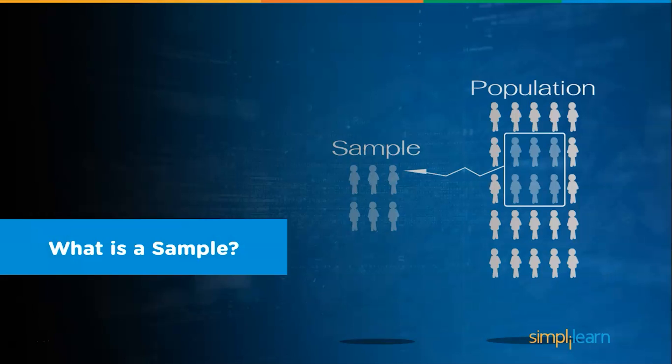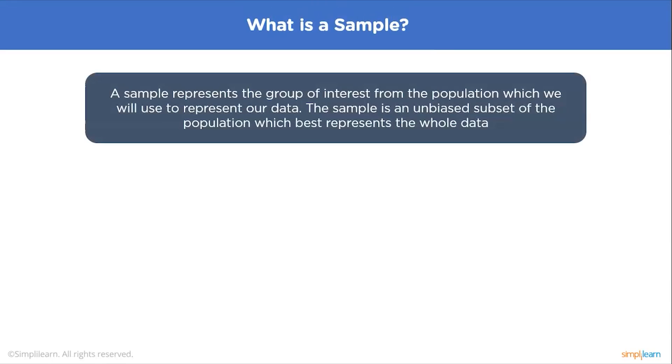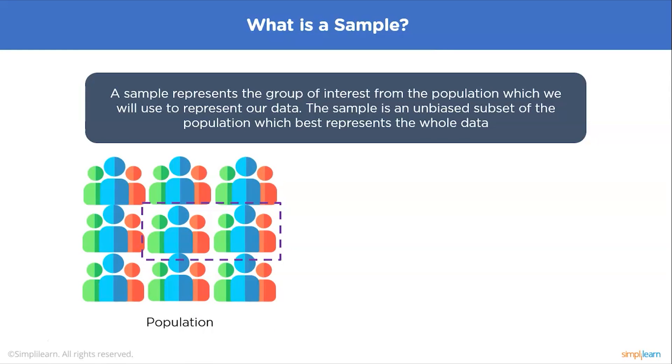This brings us to the topic: what is a sample? A sample represents the group of interest from the population which we will use to represent our data. The sample is an unbiased subset of the population which best represents the whole data. A sample consists of some observations drawn from the population, so a part or a subset of the population. The sample is a group of elements who actually participate in the study.